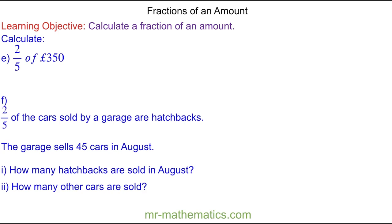So for question E, we're going to work out two fifths of 350 pounds. We'll begin by working out one fifth and then we will multiply it by two for two fifths. So one fifth will be the 350 pounds divided by five, which we can do using a bus stop method.